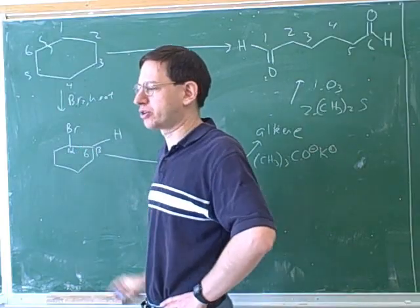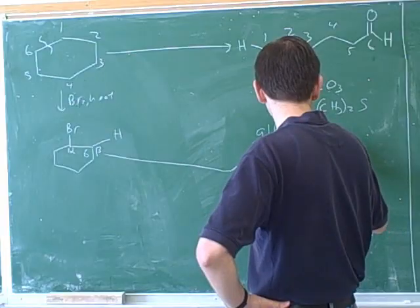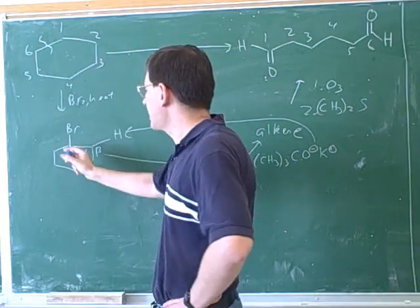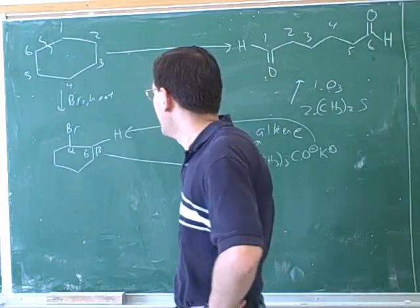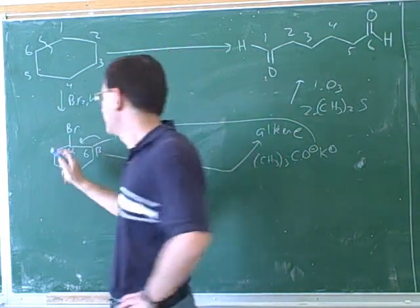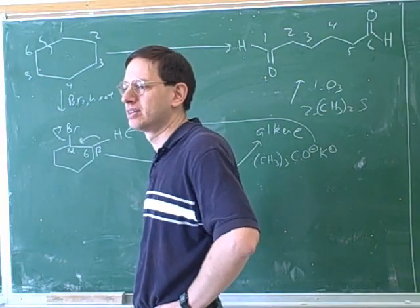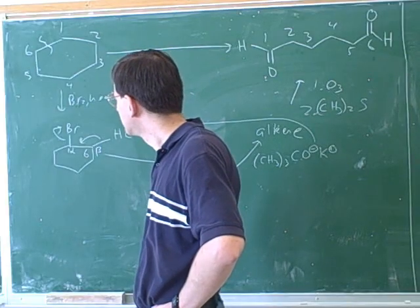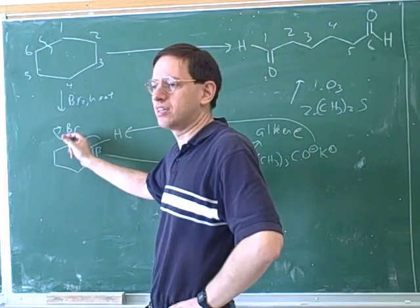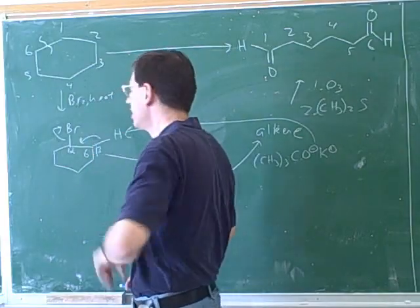It doesn't matter which beta carbon we focus on here because they're symmetrical. Here's the alpha carbon — the one with the leaving group — and here's the beta carbon next to it. So the base takes the beta hydrogen, freeing up those electrons to move over to form the double bond. That would break the octet rule at the alpha carbon unless the leaving group leaves — it's being forced by the arrow. In an E2 reaction, all three of these arrows happen simultaneously. In an E1 reaction, the leaving group would leave first, and then the other steps would follow.